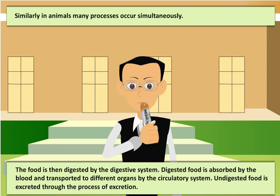The food is then digested by the digestive system. Digested food is absorbed by the blood and transported to different organs by the circulatory system. Undigested food is excreted through the process of excretion.